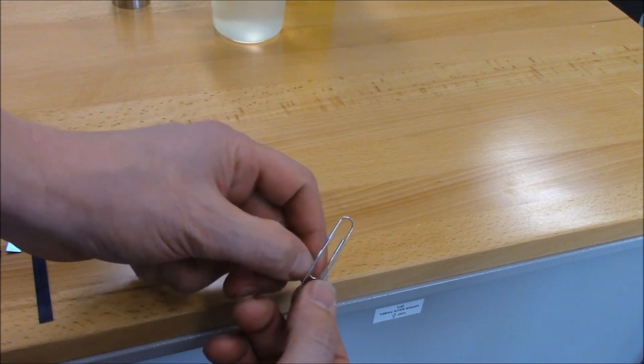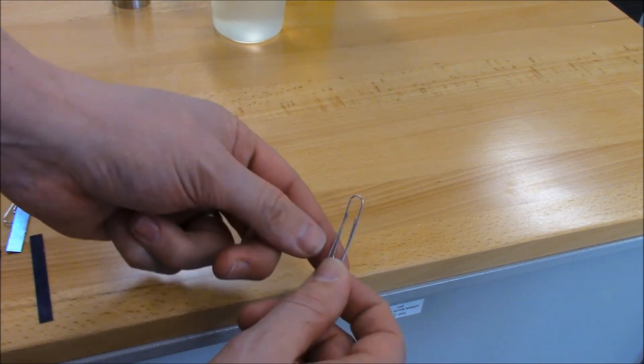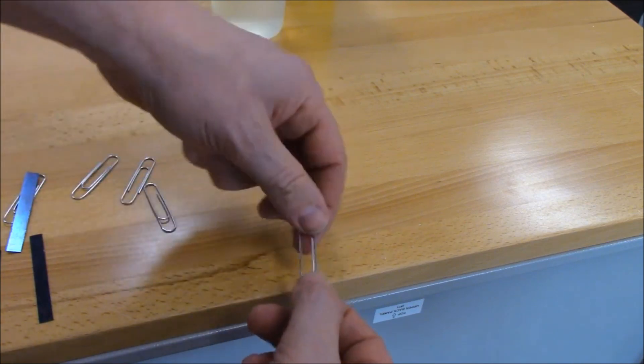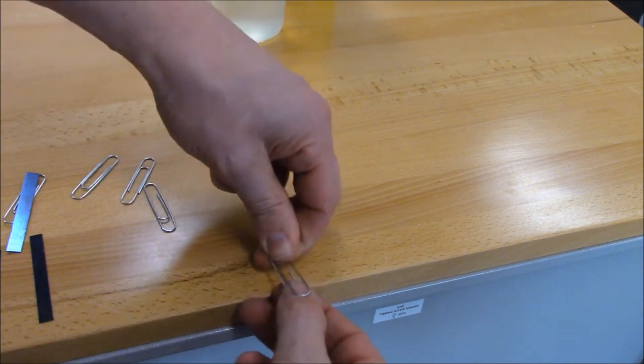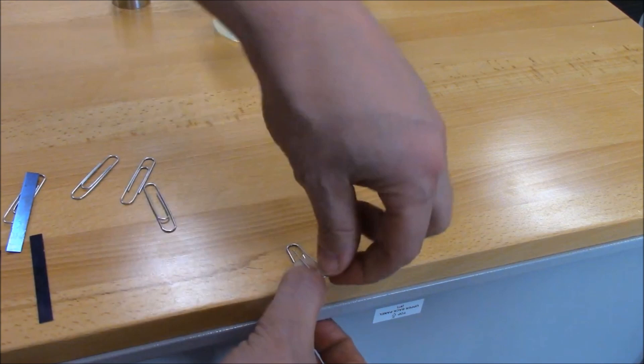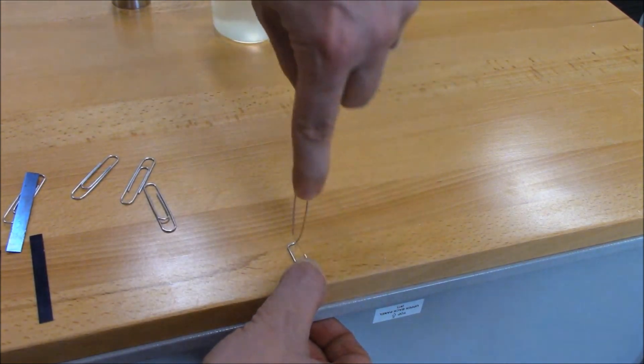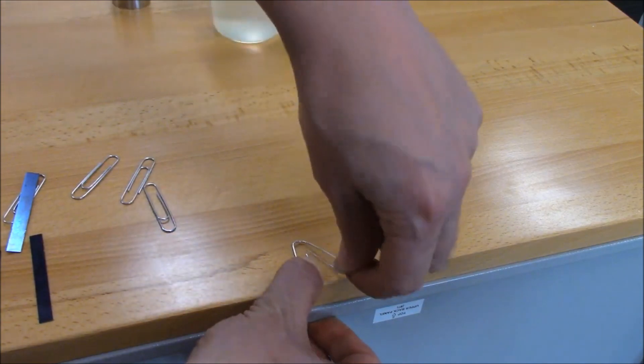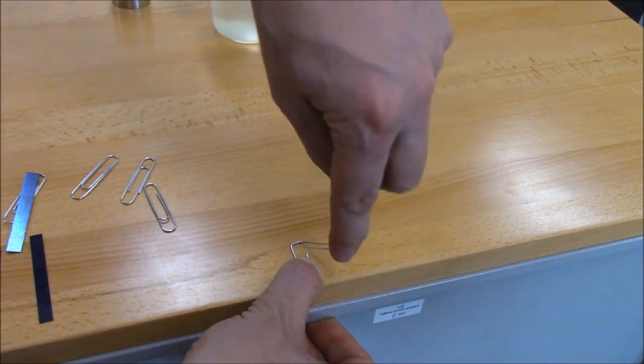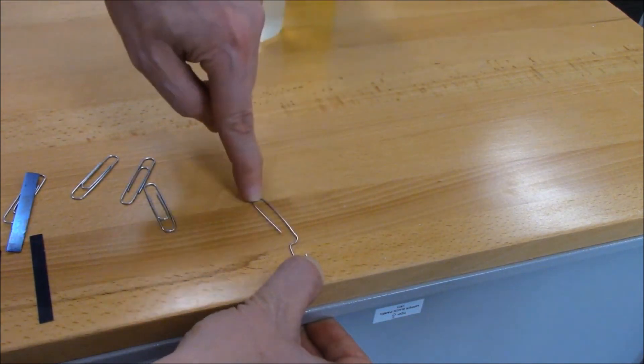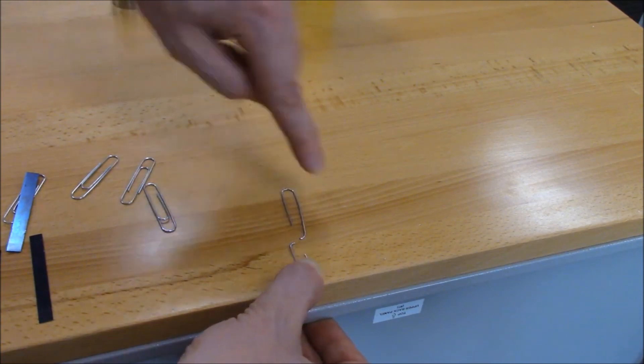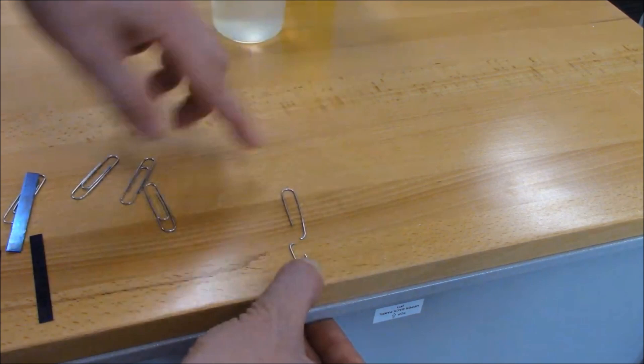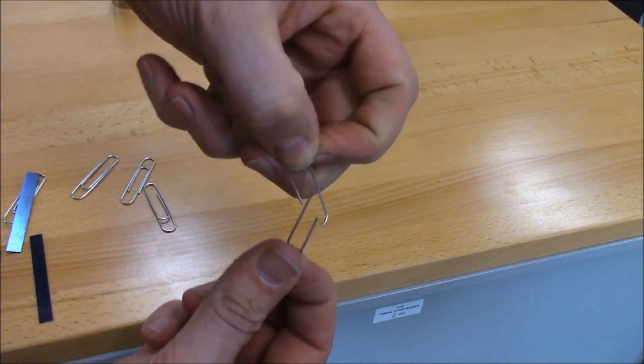First of all, I want to show you the typical strength of a paperclip. I'm just going to do a simple test here. I'm just going to bend it all the way up and all the way back down, and I'm going to do it again all the way up, and it broke. So it only took one, two, three, or one and a half cycles just to break it.